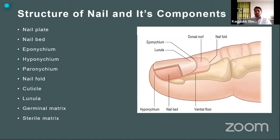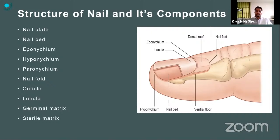Coming to the structure of the nail and its components: what we see externally is the nail plate, while the structure below it from which the nail plate forms is called the nail bed. The nail bed is formed by a germinal matrix and a sterile matrix. The germinal matrix is in the proximal part, seen as a white area commonly called the lunula. The proximal fold is called the eponychium, while the distal end of the nail bed is called the hyponychium. The total nail bed apparatus is called the peronychium.